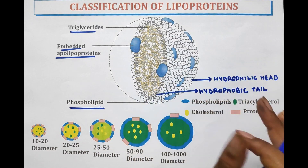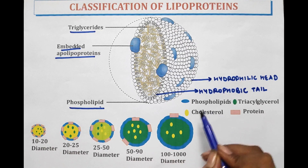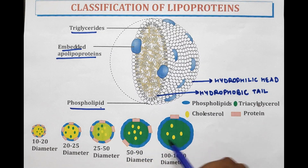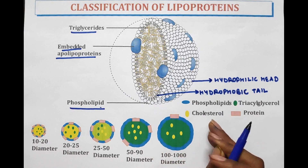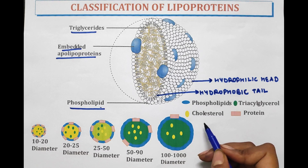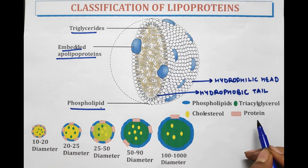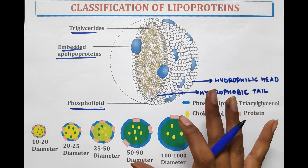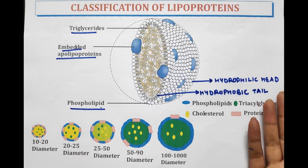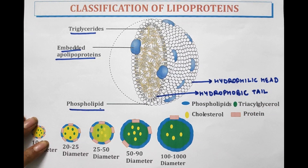Phospholipid, embedded apolipoproteins, and triglycerides together form a lipoprotein. Now regarding the amounts: phospholipid is the largest component of the cell membrane; triglyceride is present inside in a huge amount; cholesterol is present in small amounts; and protein is also present. Cholesterol is an organic molecule and is a sterol — a type of lipid. Now we'll discuss about the classification of lipoproteins.